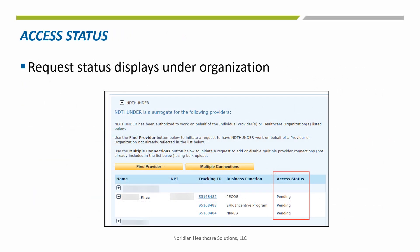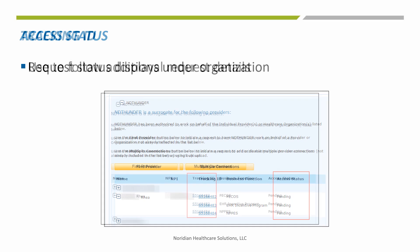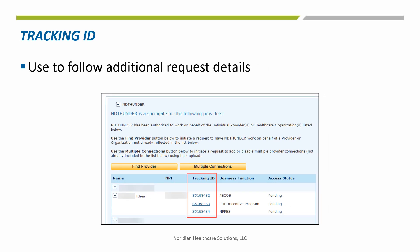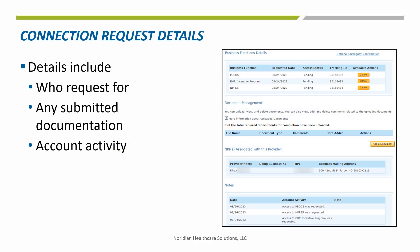Back on the My Connections tab, surrogacy requests will display under the organization with a request status. This also confirms the request submission was successful and is pending provider approval. Use the provided tracking numbers to view progress and additional information about the request. The tracking ID opens to allow canceling a request, document management, a list of associated NPIs, and notes about account activity.